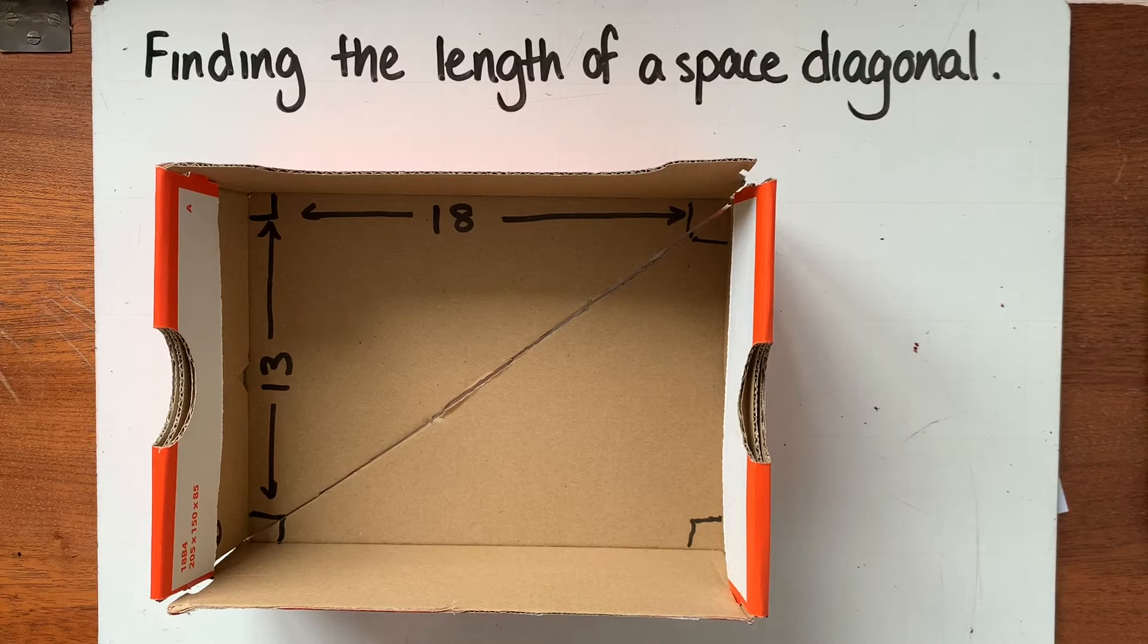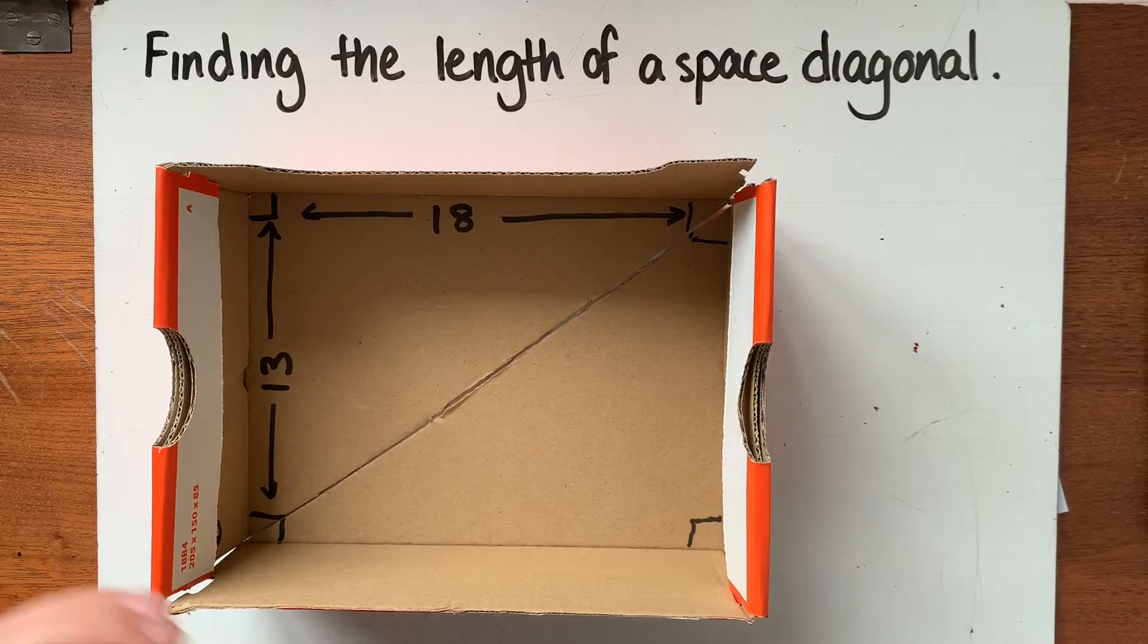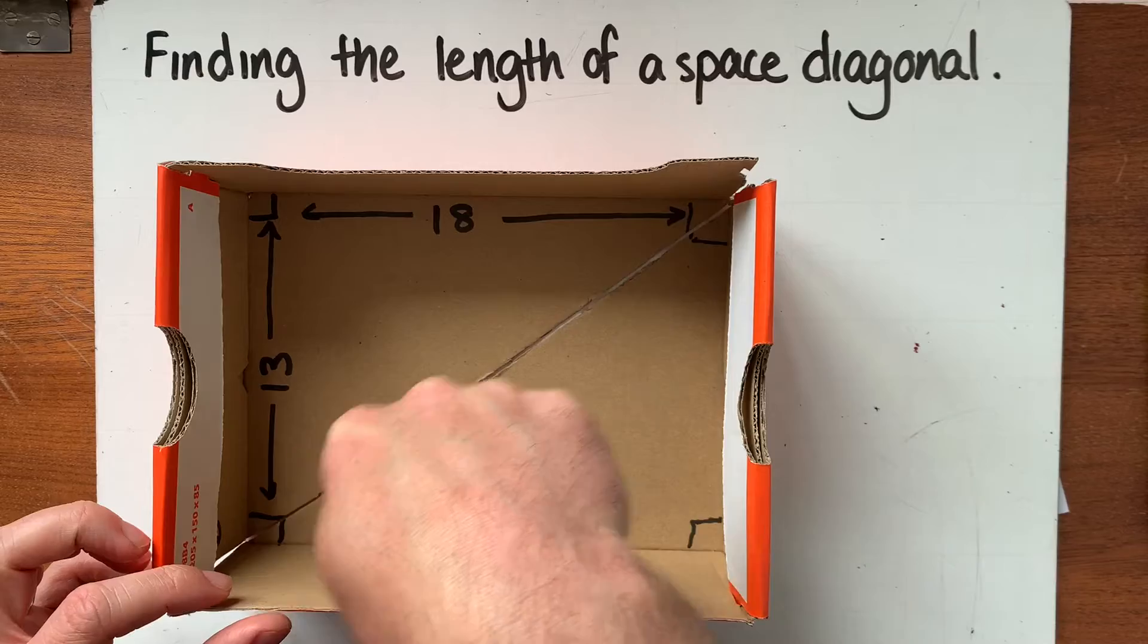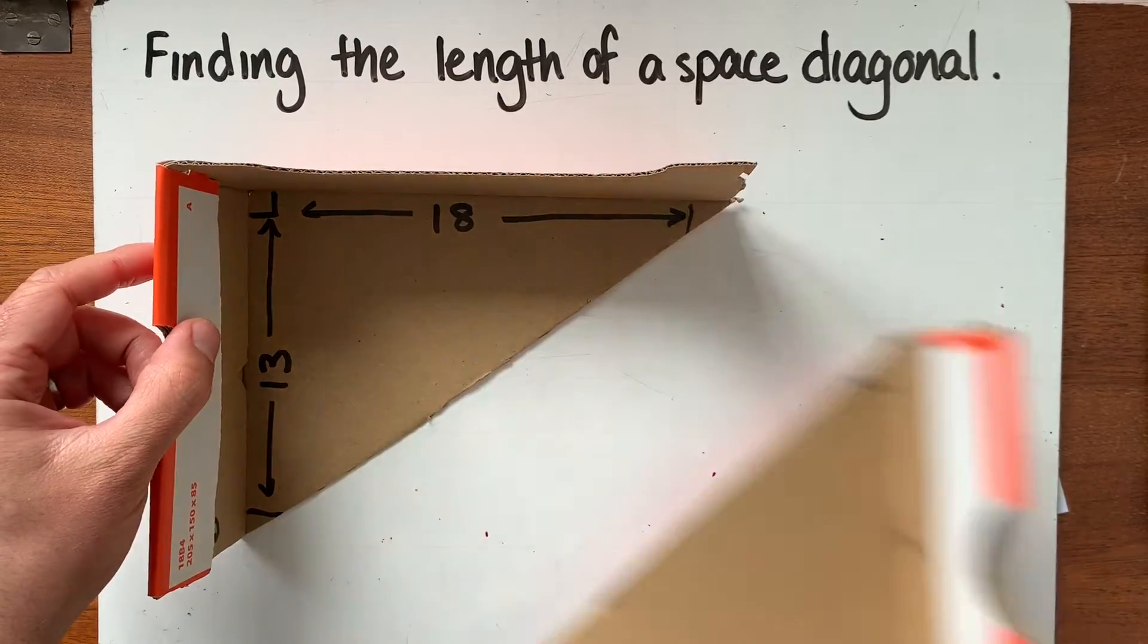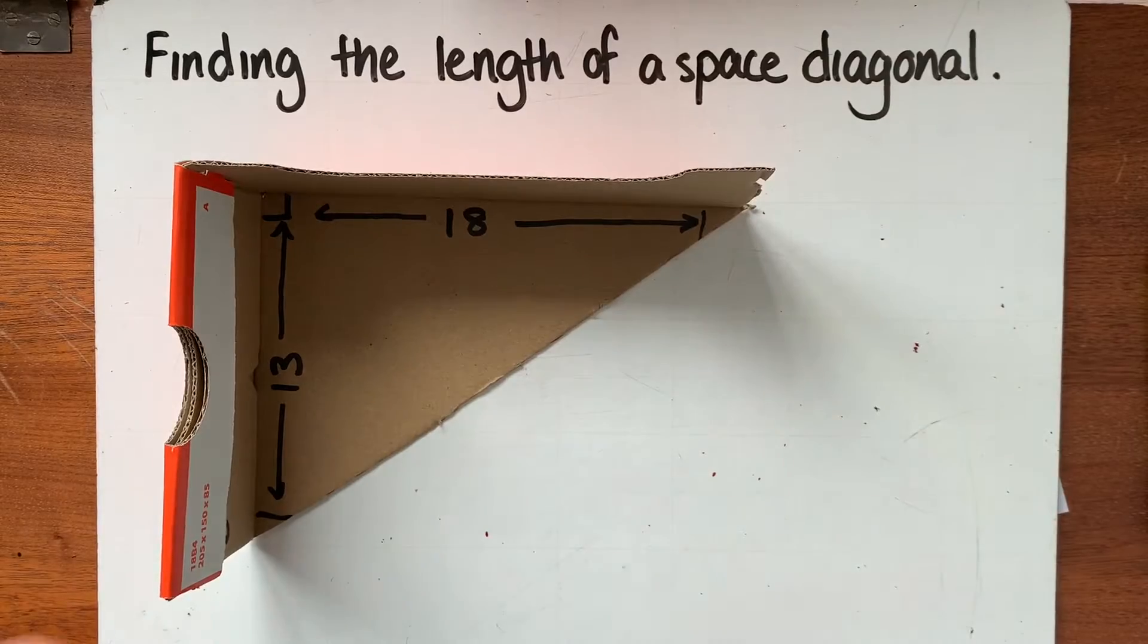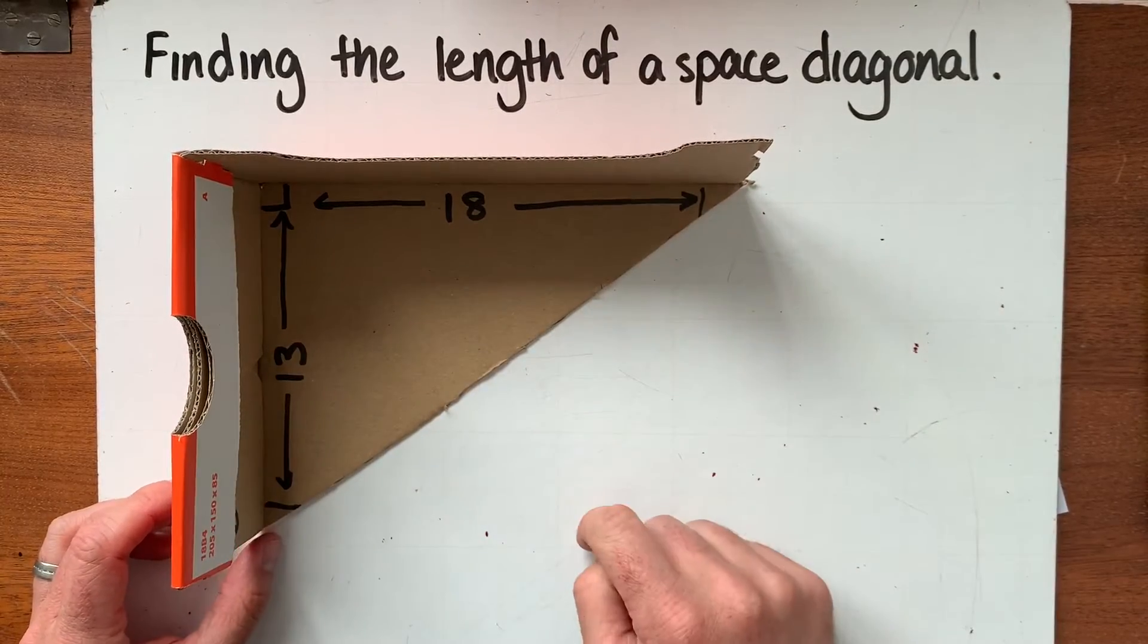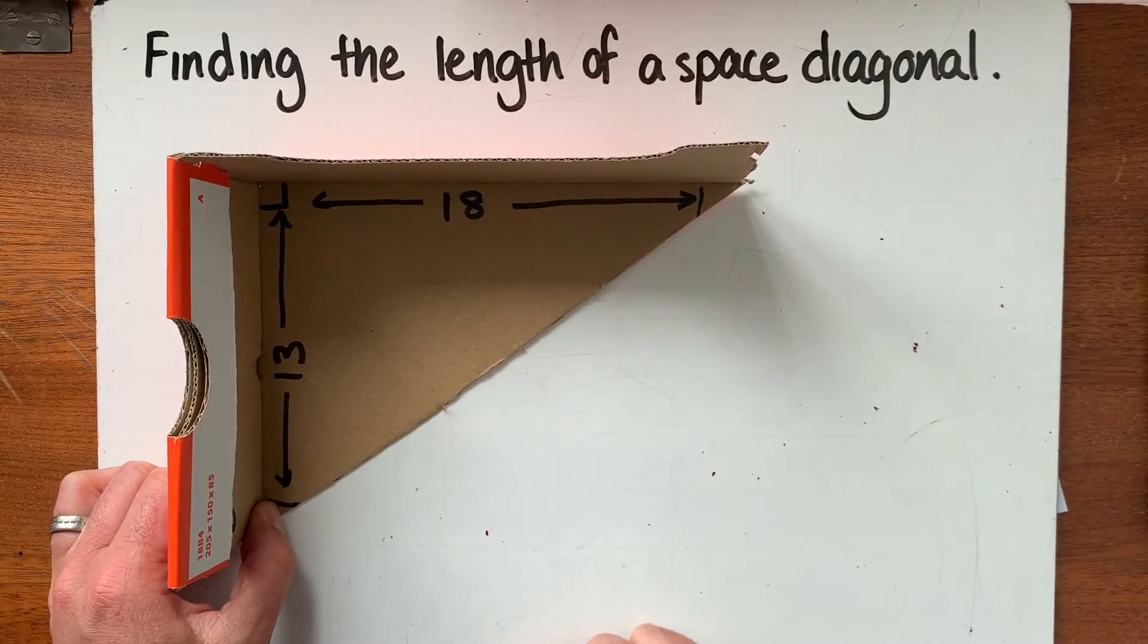Now the first thing to do when you're finding the length of the space diagonal is to find the length of the face diagonal on the base here. So the face diagonal on the base. And so what I've done to make this easy is I'm going to chop the box in half and hopefully what you can see here is we've got a right angle triangle where we're looking to find the longest side.